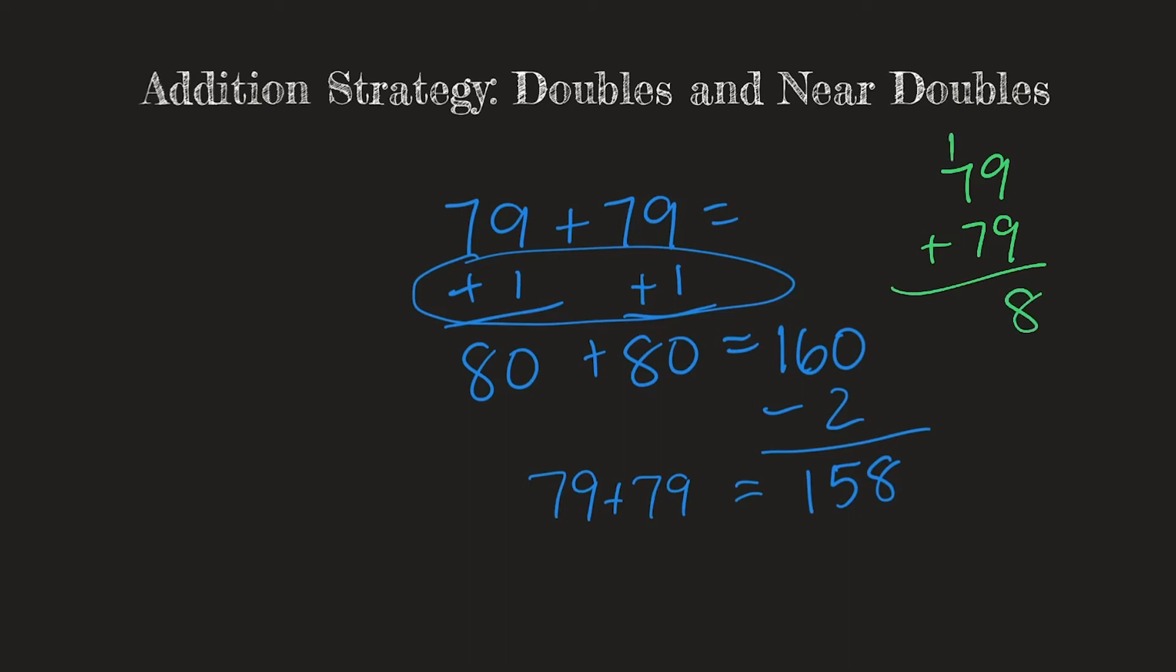7 plus 7 is 14, plus 1 is 15, and it's 158. So these are two different ways that you can do this problem.